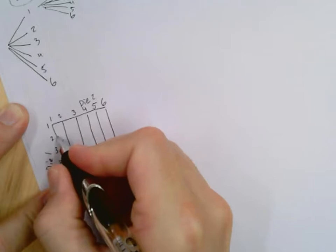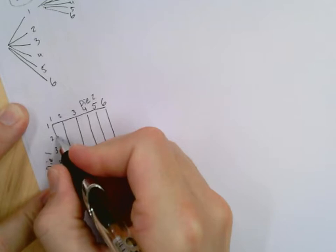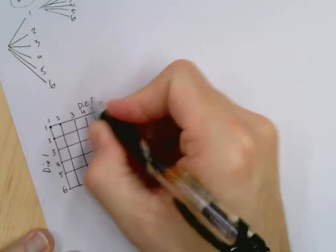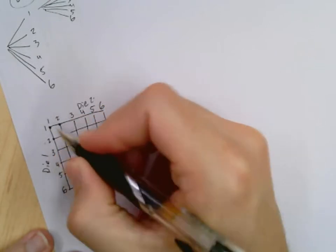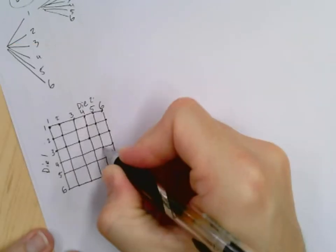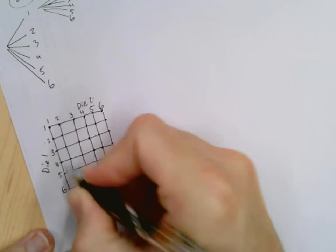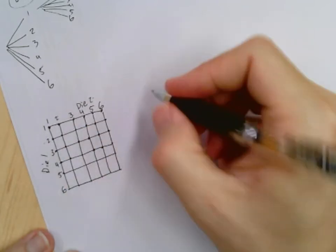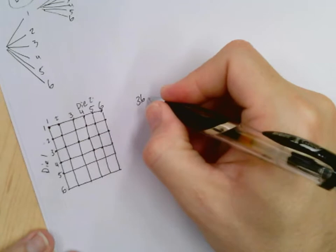So now what you're seeing, this is why this is often called a 2D grid, but what you're seeing is a sample space diagram for the two dice. Anywhere where the two lines cross, you get a different possibility. This is one, one. This is a two on die one, and a one on die two. And so you can see that each of these points represents a different combination of rolls. Now you don't actually have to count them up, because we know that if there are six here and six there, that there are a total of 36 possibilities.